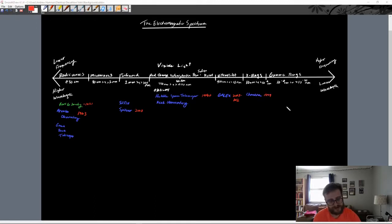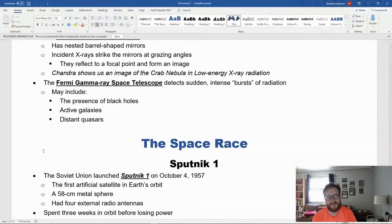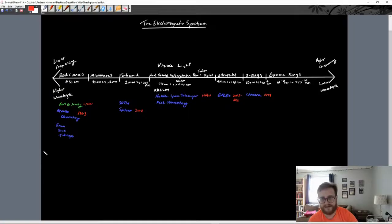Lastly, we have the Fermi Gamma Ray Space Telescope, which detects sudden intense bursts of radiation in gamma rays, which can possibly include the presence of black holes, active galaxies, and distant quasars. That's the last one—Fermi in the gamma ray area.